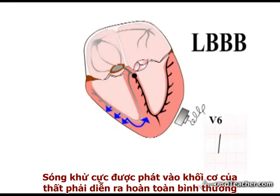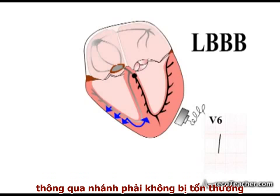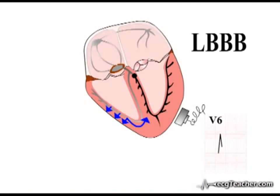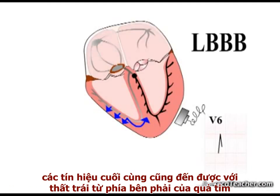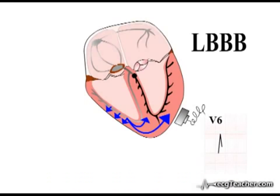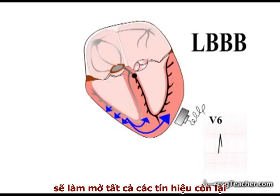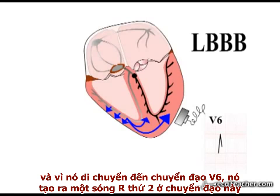Depolarisation is discharged into the right ventricular muscle mass in a timely fashion through the intact right bundle, and as this signal is moving away from V6, we start to see a negative deflection develop in this lead. However, as this process is taking place, the signal finally reaches the left ventricle from the right side of the heart. The slow spread of signal through the left ventricle dominates all others, and as it is moving towards V6, it generates a second R wave in this lead.